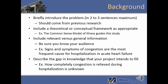The first section of your abstract is the background. Keep it short and sweet — briefly introduce the problem you want to study, say a little about previous research in the area, and try to keep it to two to three sentences maximum. Don't use a lot of your word count on the background. Make sure you include what you intend to study. This section often includes a theoretical or conceptual framework if appropriate — for example, simply stating 'the common sense model of illness guides this study' is sufficient.